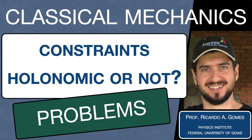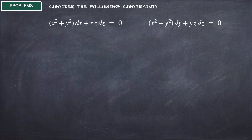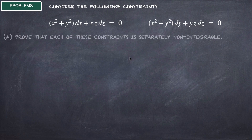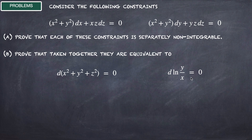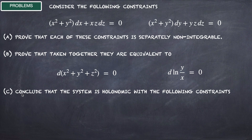Hello everyone, I'm Professor Ricardo. In this video we are going to solve a problem about differential constraints. Consider the following constraints: x squared plus y squared dx plus xz dz equals zero, and x squared plus y squared dy plus yz dz equals zero. First, prove that each of these constraints is separately non-integrable. Then prove that taken together these constraints are equivalent to two other differential equations, and conclude that the system is holonomic.